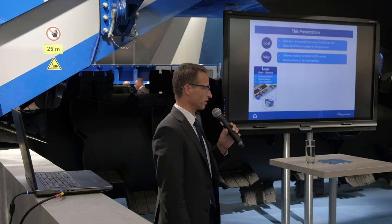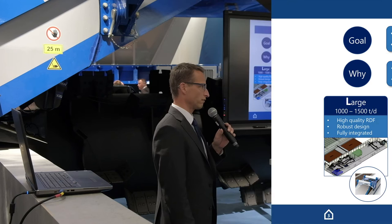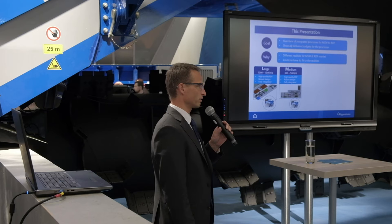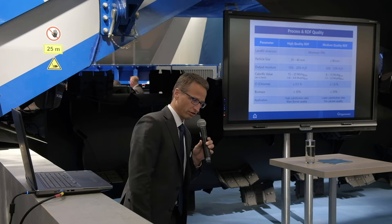At the end we'll look at the cost of such a process. We talk about large facilities, roughly 1000 tons per day and above, which produce high quality RDF. We will talk about medium size facilities, more in the range of 300 to 500 tons per day, also producing high quality RDF. Then there are smaller sites which cannot affordably produce high quality RDF, but more medium or lower quality RDF. The same is possible on a fully mobile version.